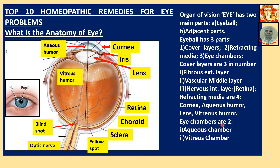Eye chambers are two: aqueous chamber and vitreous chamber. The aqueous chamber contains aqueous humor; the vitreous chamber contains vitreous humor. The surrounding circular part around the pupil is called the iris.